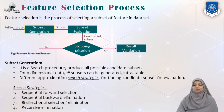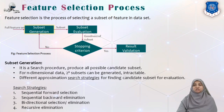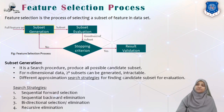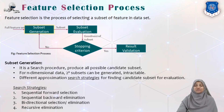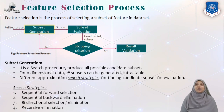Subset generation is a search procedure that produces all possible candidate subsets. For example, if I have 10 features, we can perform multiple permutations and generate different candidate subsets. For n-dimensional data, 2 raised to n subsets can be generated — meaning for 10 features, 2 raised to 10 possible candidate sets exist. This is intractable; we obviously cannot test each and every candidate subset. So we must have some search strategy that helps us generate only good candidate subsets, not all possible ones.